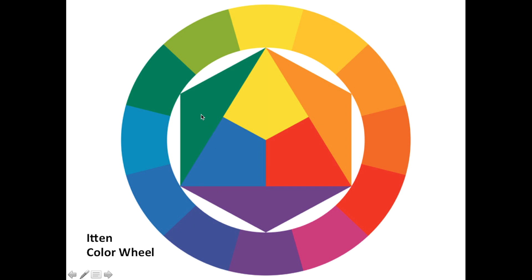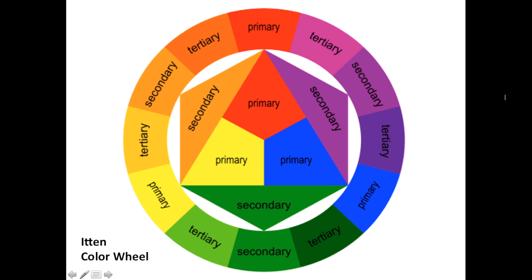On the Itten color wheel: mixing yellow and blue gives green; yellow and red gives orange; red and blue gives violet. Between the primary and secondary colors are tertiary colors. Color wheels can be extremely valuable for the artist when inventing color for a piece — there are a variety of color wheels available.